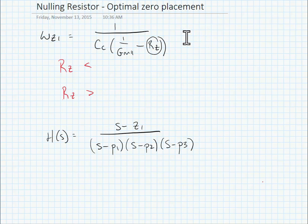In our last video, we showed that if we add a nulling resistor in series with our compensation capacitor, we could control the location of the zero. We can control the zero so that it's either in the right half plane or in the left half plane, allowing us to control the phase shift. Here is our equation for omega z1: 1 over cc times the quantity 1 over gm2 minus Rz, the size of the resistor.